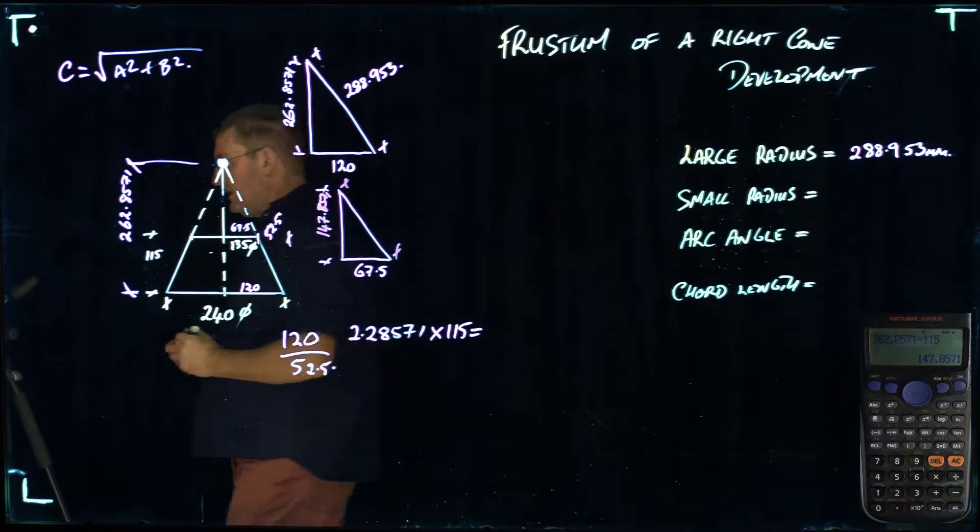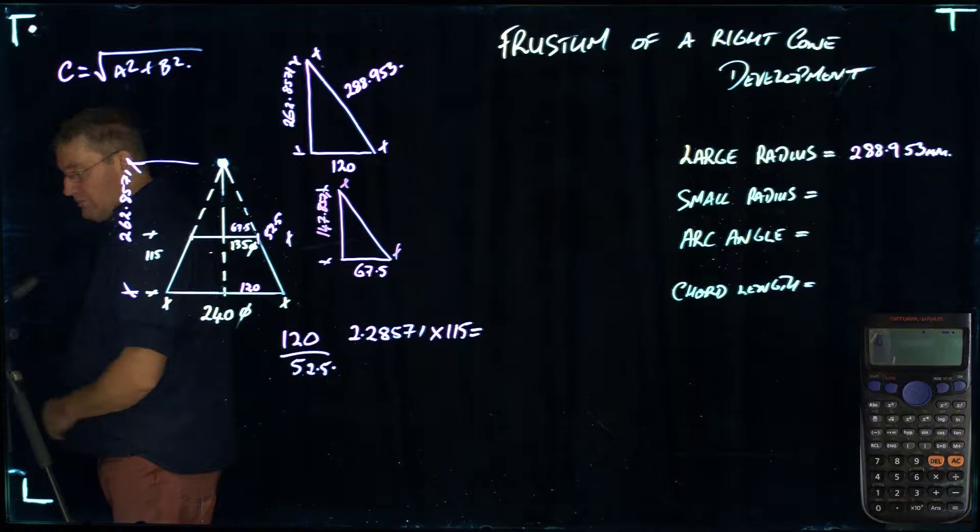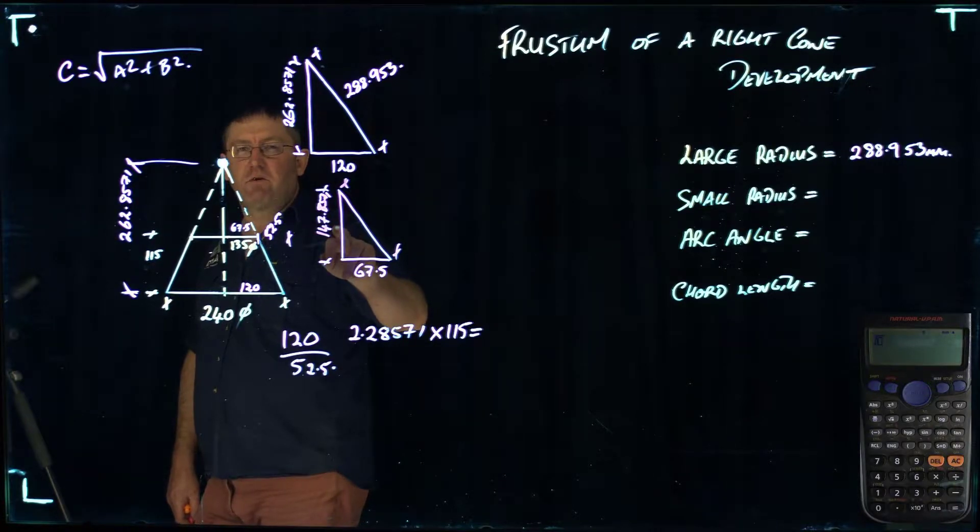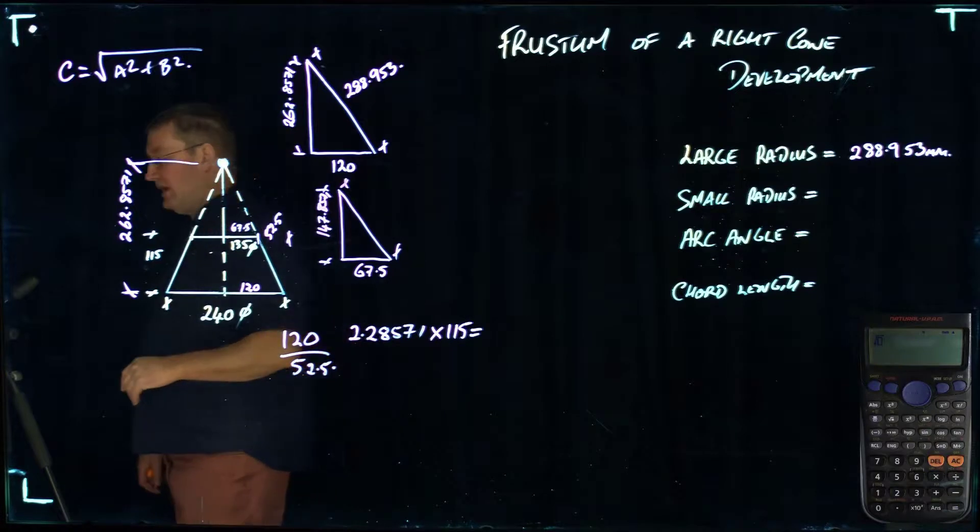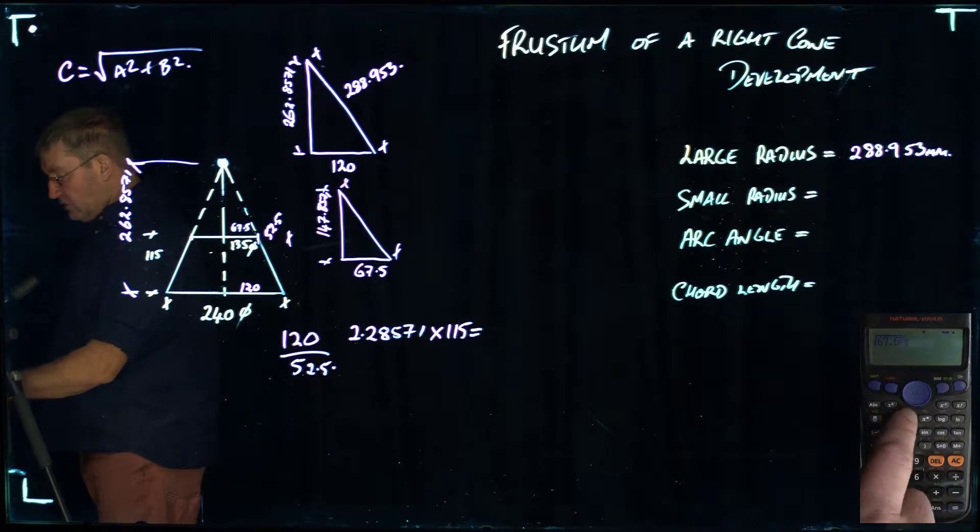Now I can work out the small radius, which is this distance in here. I'm going to go back to the calculator. I'm going to do it all on hand so you can see it. I push the square root figure. It doesn't matter whether the 67.5 or the 147.8571 is the A or the B. They're interchangeable, completely irrelevant.